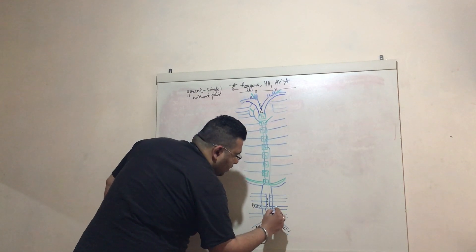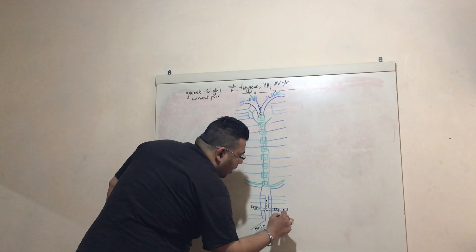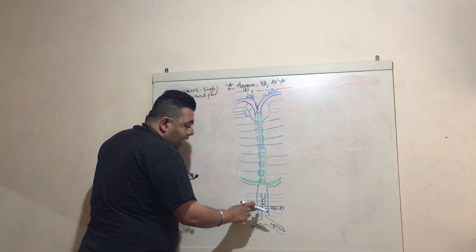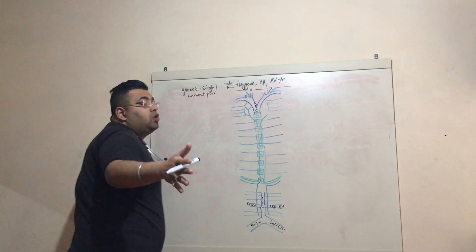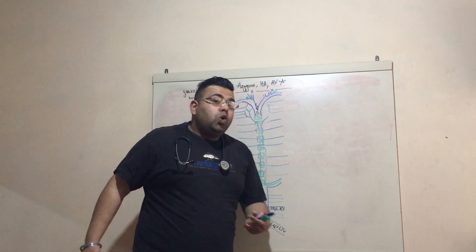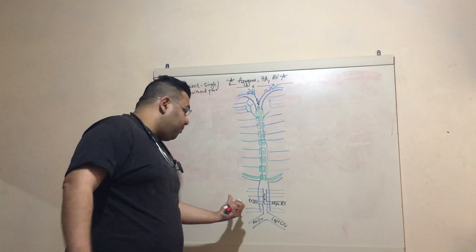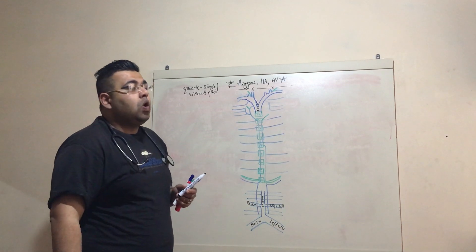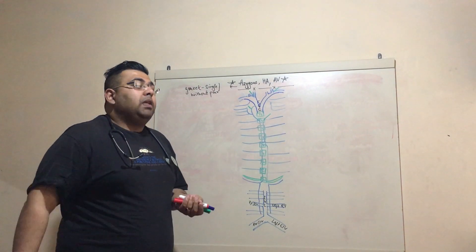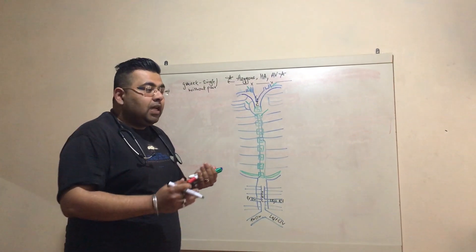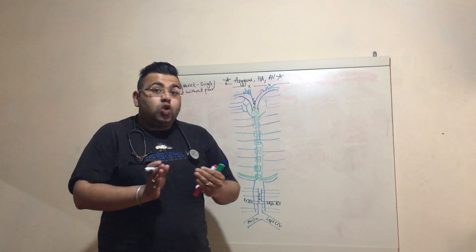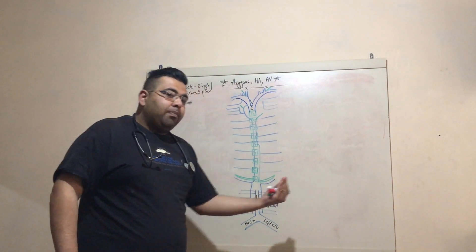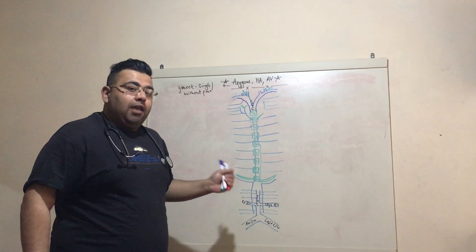This is the right renal vein and this is the left renal vein. Notice that the left renal vein is drawn a bit longer compared to the right renal vein. This is a question your teachers will ask. The answer is that the IVC and SVC venous drainage system is situated a bit towards the right side, so the left renal vein has to travel longer to drain into the IVC.